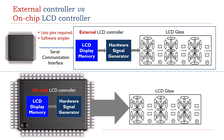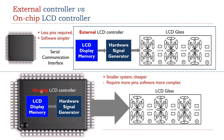The advantage of having an on-chip LCD controller is that the system can be made smaller and cheaper. However, it uses many processor pins and requires complex software to drive the LCD. In this tutorial, we focus on the on-chip LCD controller.